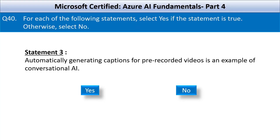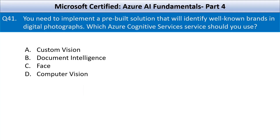The third statement is: automatically generating captions for pre-recorded videos is an example of conversational AI. This is an incorrect statement. This task falls under speech-to-text or audio transcription, which is part of speech recognition in the broader AI domain.